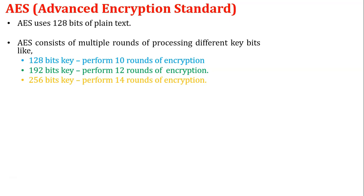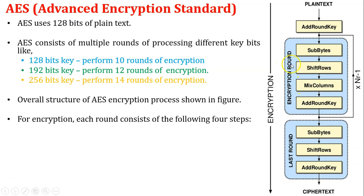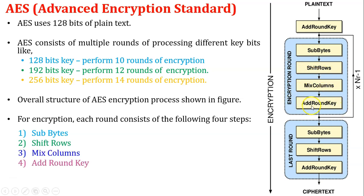In the AES encryption algorithm, the plain text size is fixed at 128 bits, but it uses different sizes of encryption keys. This diagram shows the overall structure of the AES encryption process. Each round consists of 4 steps: substitution bytes, shift rows, mix columns, and add round key.